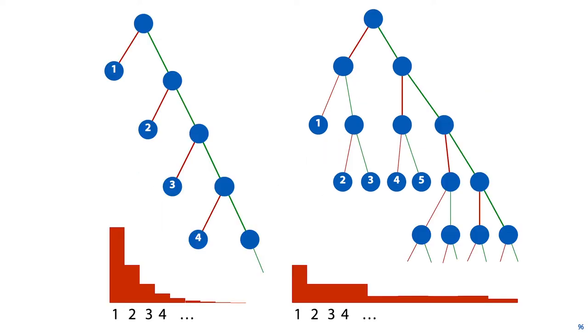Here are two examples on the natural numbers. What we see on the left is an exponentially decaying distribution. Each next number is half as likely as the previous one. On the right, we see a roughly polynomially decaying one. By designing these kinds of trees, we can define different distributions.